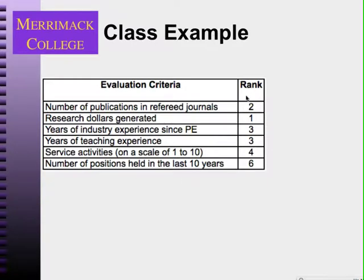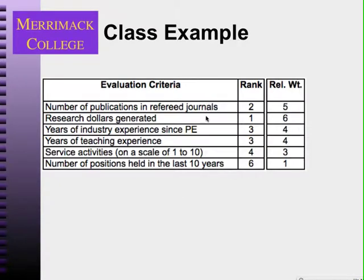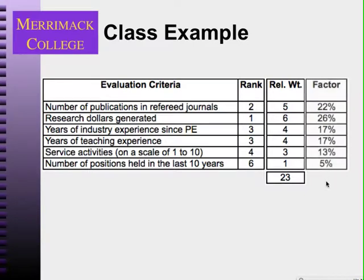The next step is to assign scoring — we want to weight these different objectives. The first step is to assign the highest number to the highest ranked objective. The most points any objective can get in this case is six, since there are six objectives. So the criterion ranked number one gets six points, and so on. Now I want to normalize that on a scale of 100. These add up to 23, and normalizing them gives me weighting factors for each criterion.